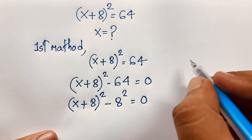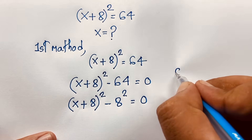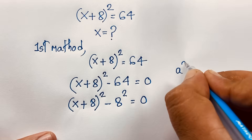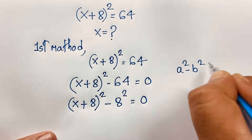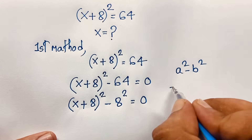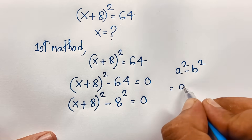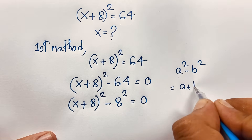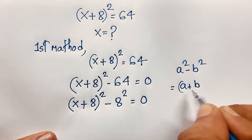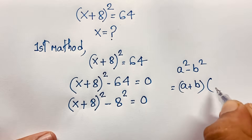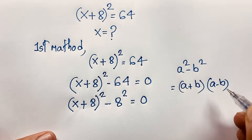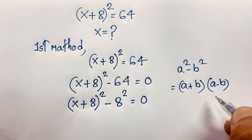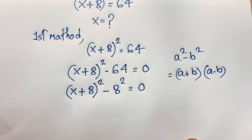Now we know the identity: a² − b² = (a + b)(a − b). If I apply this math formula here: